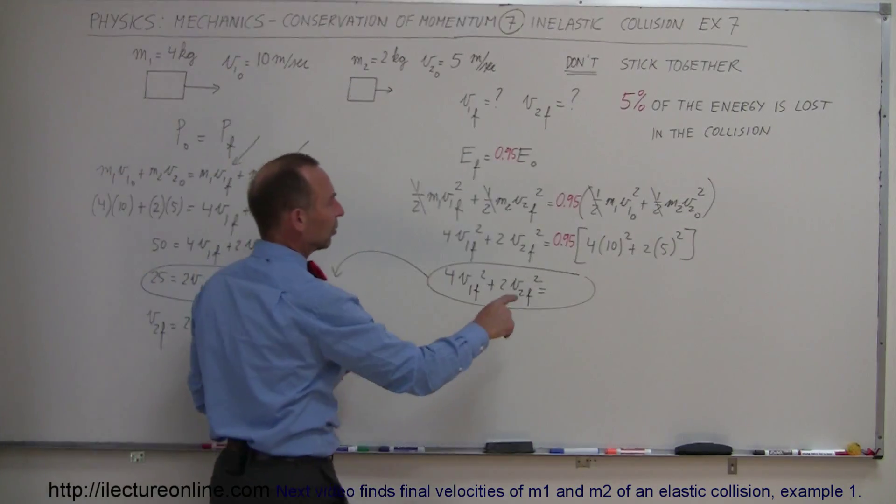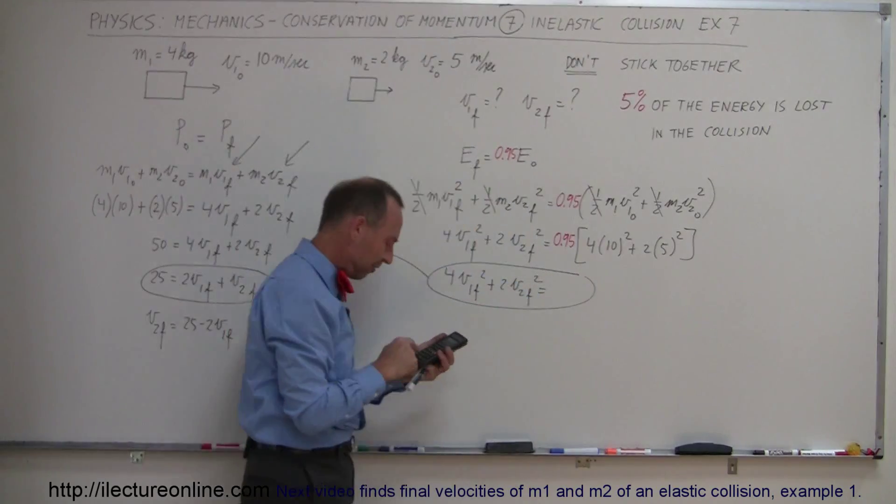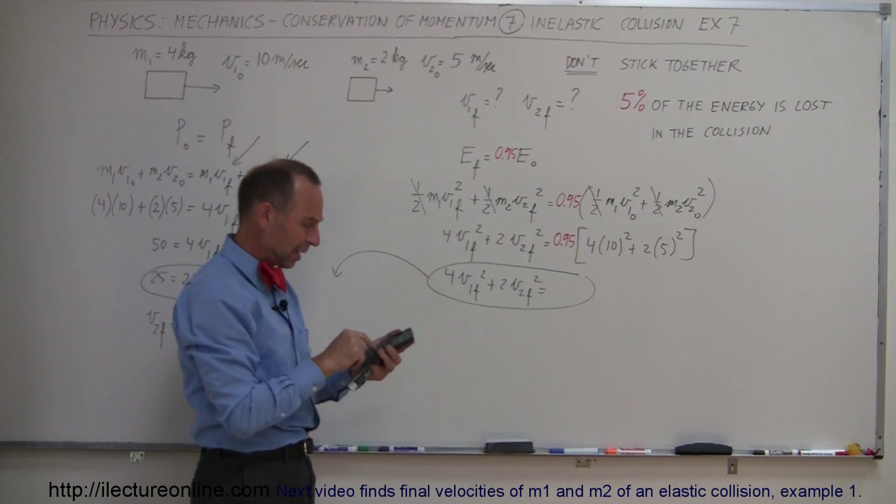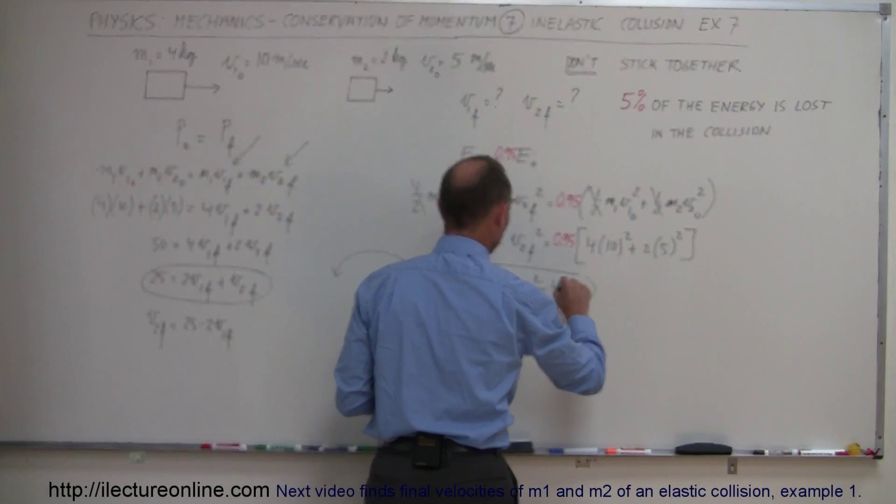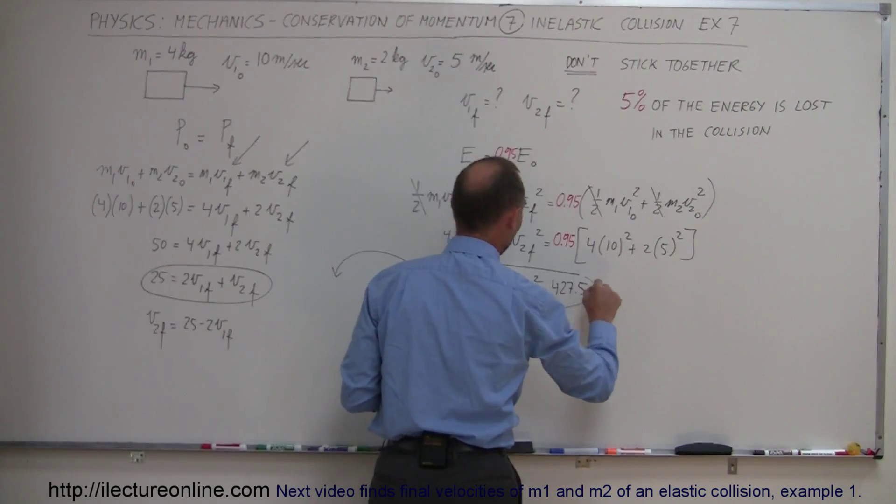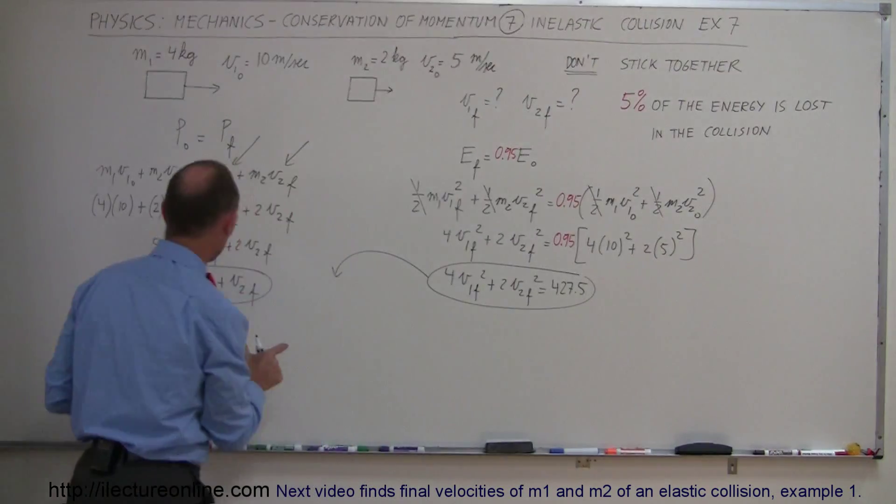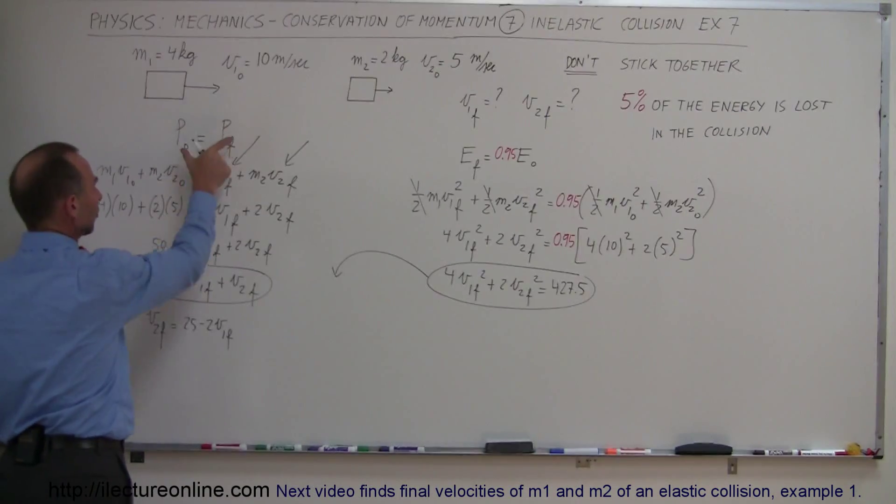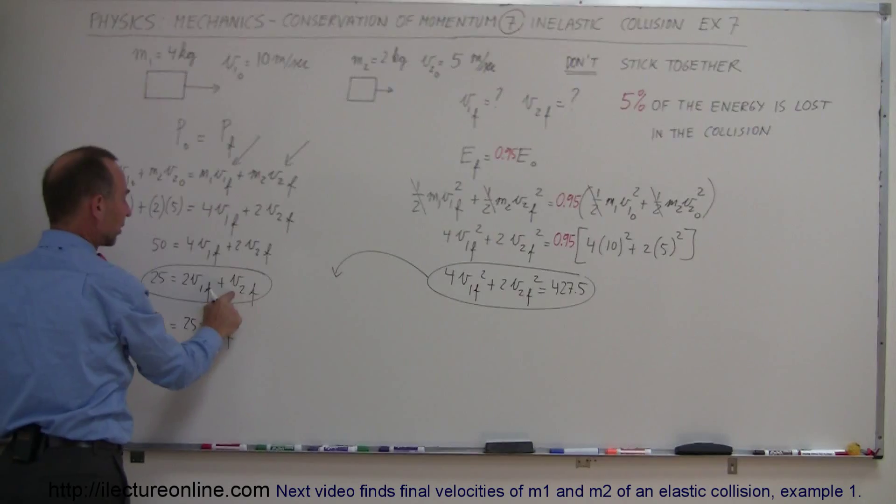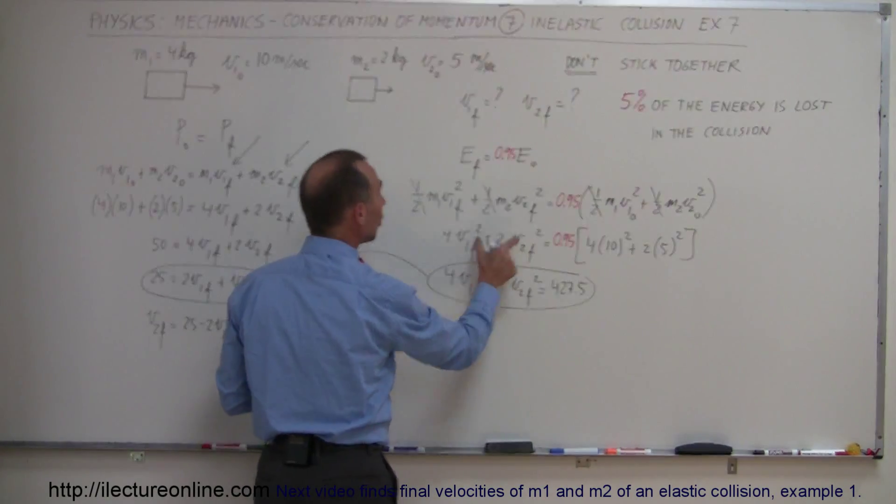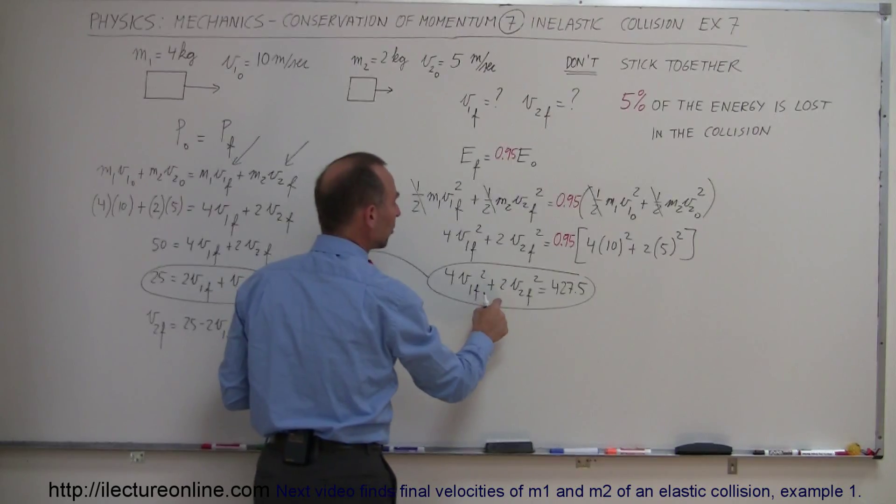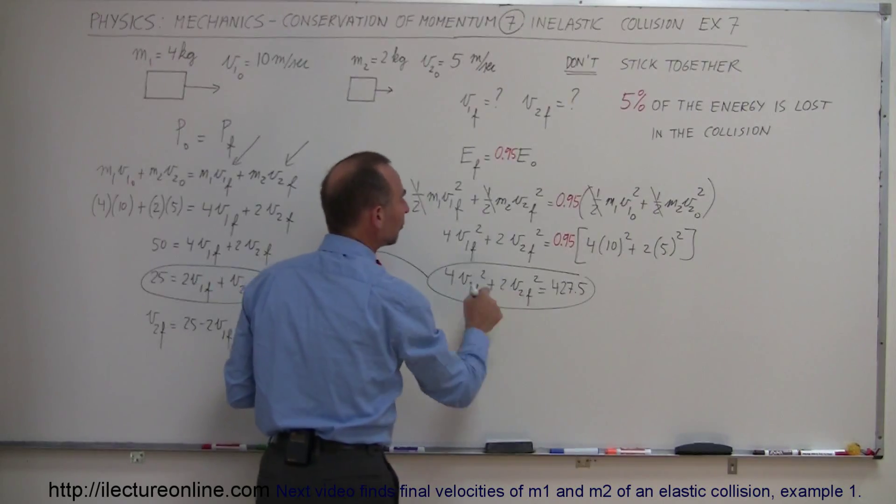So let's get a calculator. This is 400 plus 50 that's 450 times 0.95 and that becomes 427.5. So now we have two equations, a linear equation from the conservation momentum that relates V1 final and V2 final and now we have a second equation which is the quadratic equation using the energy relationship where we relate V1 final to V2 final.